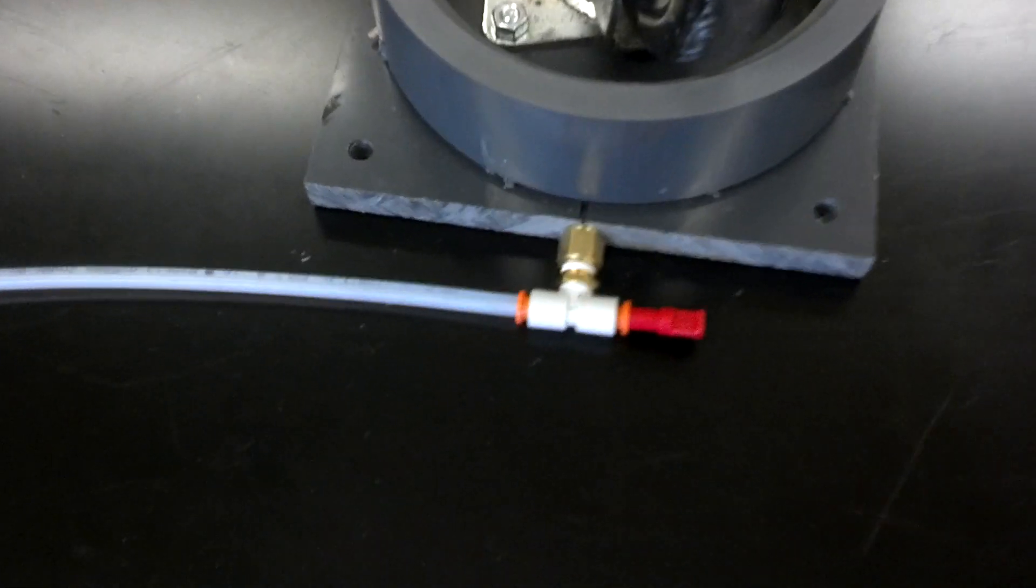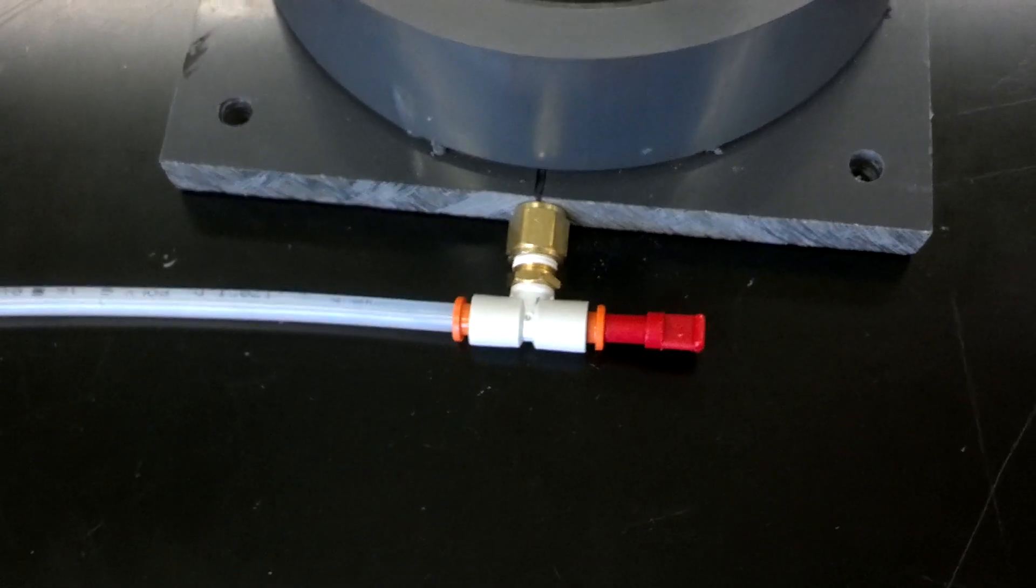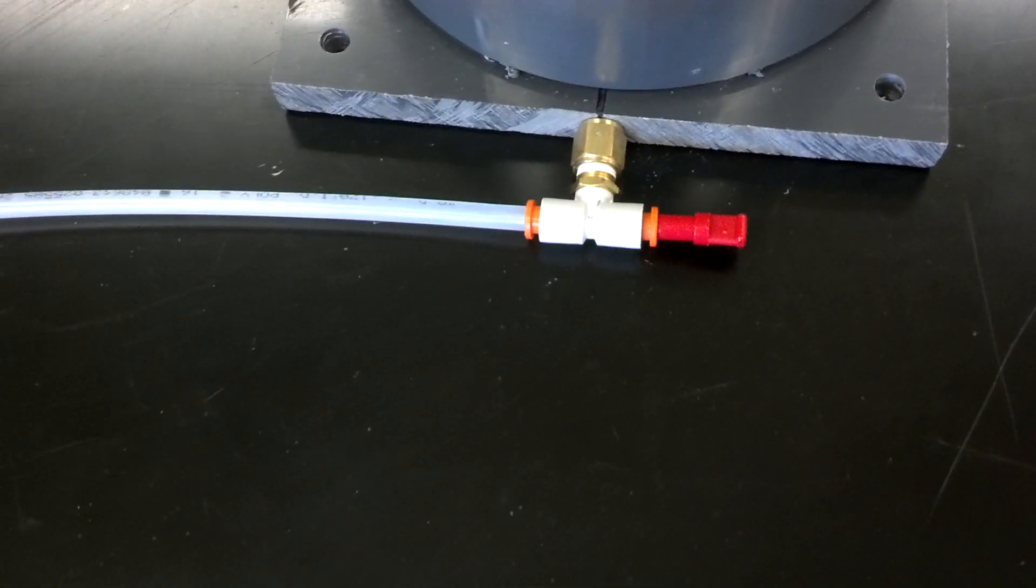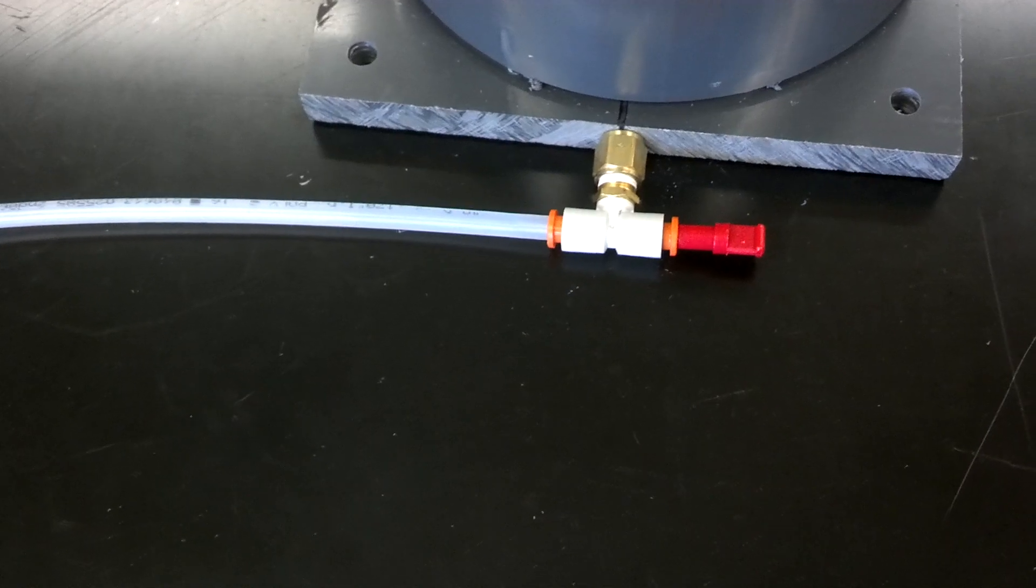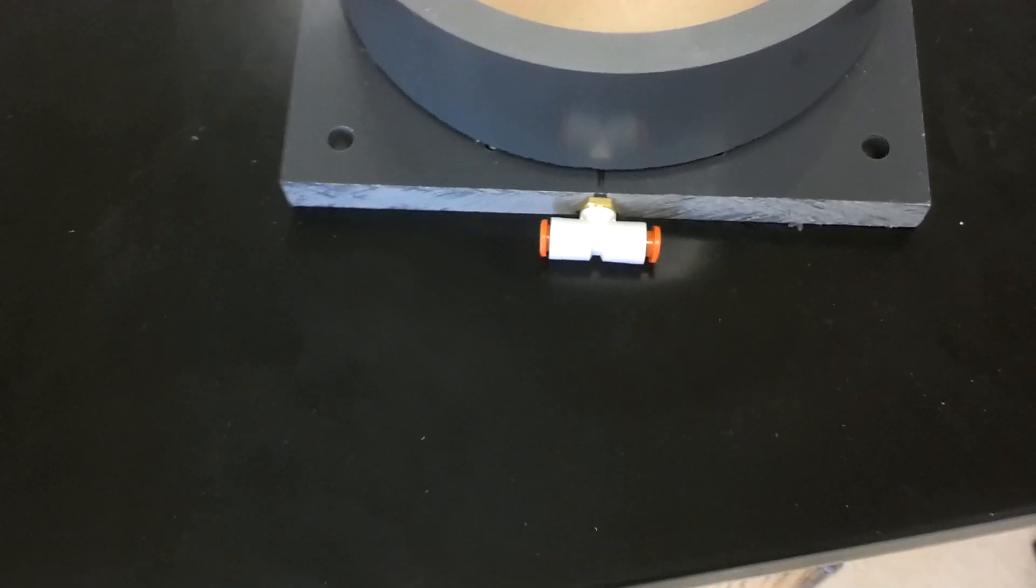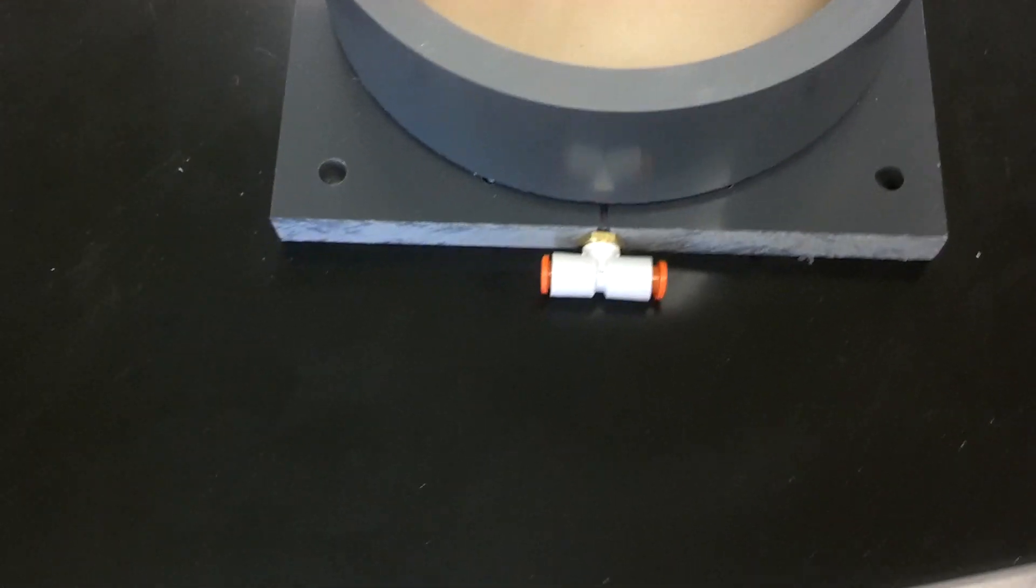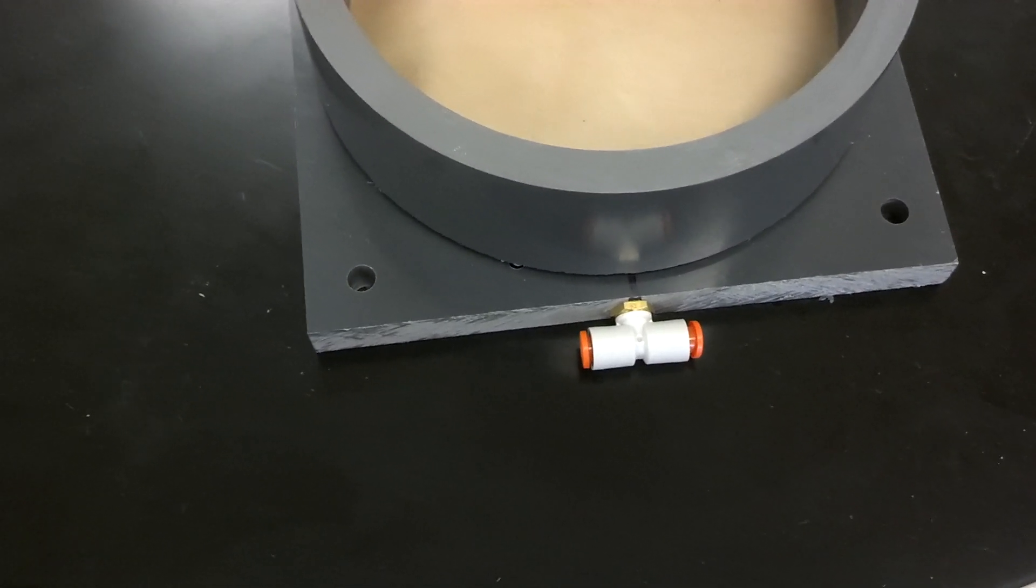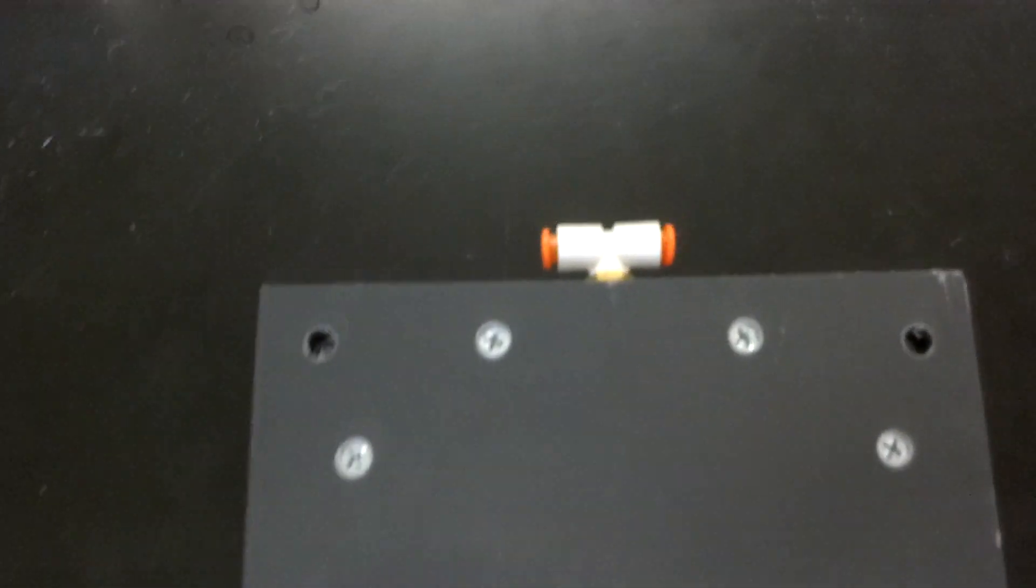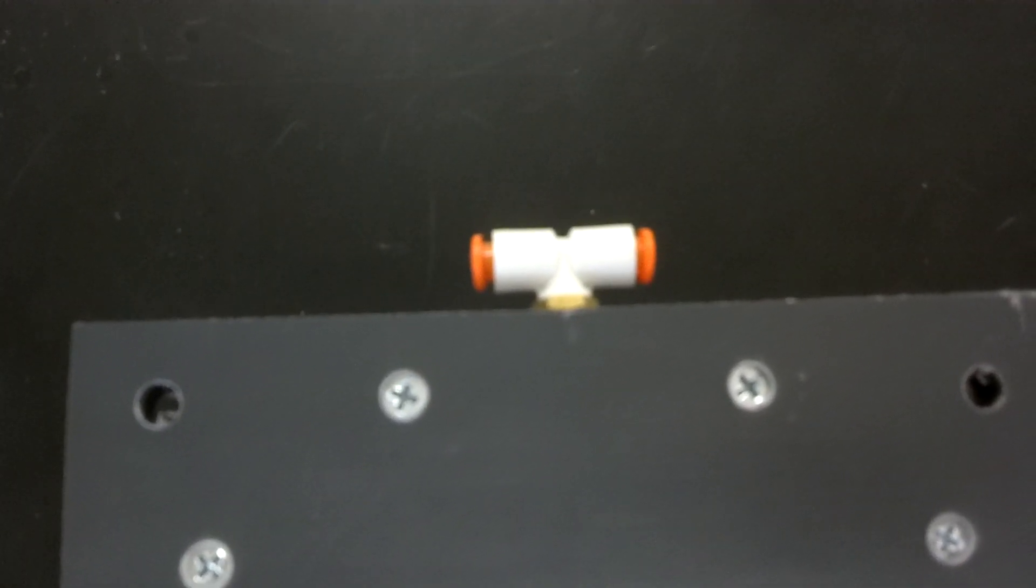As you can see from our original design where we had tamped in a hose barb brass fitting and then have a push to fit or push to connect air fitting attached to that. We then changed to pre-drilling and then tapping a 1 1⁄8 inch NPT thread into the top plate and then connecting the tee fitting directly to that threading.